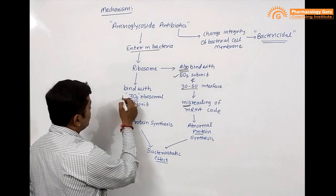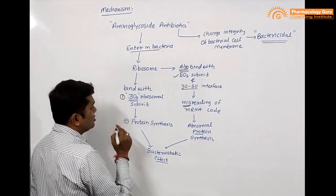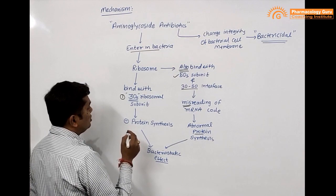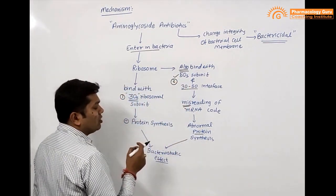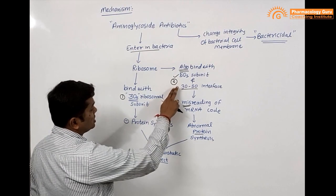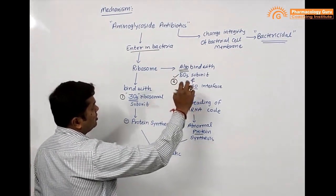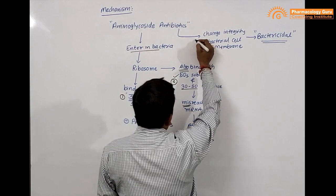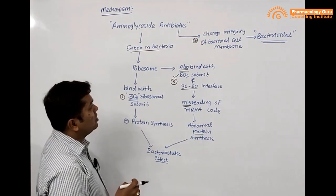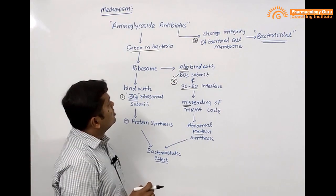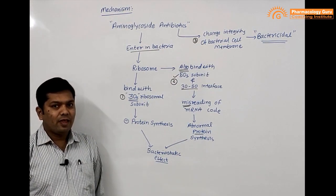To remember: first, inhibition of the 30s ribosomal subunit; second, binding with the 50s and 30s-50s interface (for aminoglycosides other than streptomycin); and third, changing the integrity of the cell membrane, which causes the bactericidal mechanism. That is all about aminoglycoside antibiotics. Thank you.